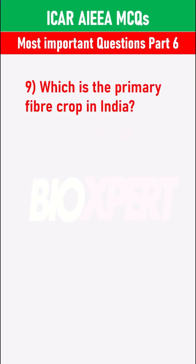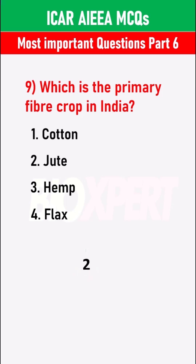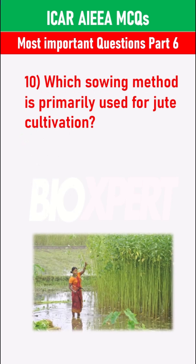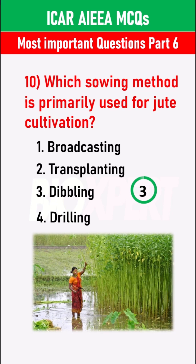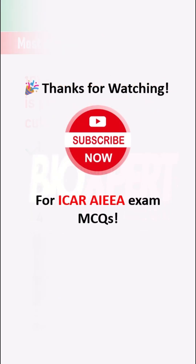Which is the primary fibre crop in India? Cotton. Which sowing method is primarily used for jute cultivation? Broadcasting. Thanks for watching — comment how many questions you got correct and subscribe now for ICAR exam MCQs!